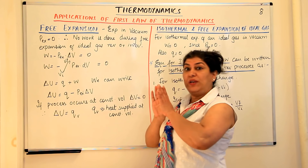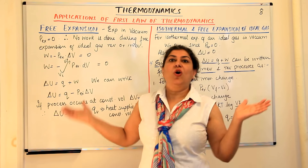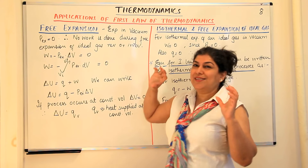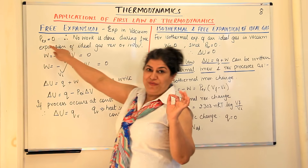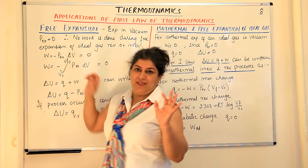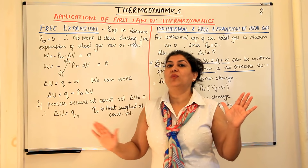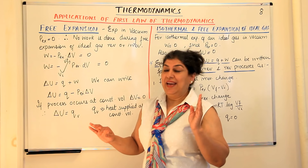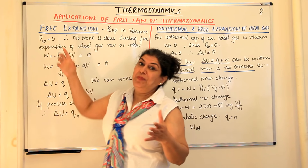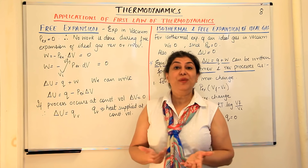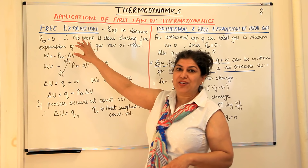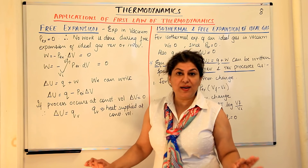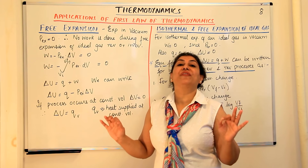There are no molecules which are going to push the piston back because there is no pressure on the outside. For free expansion, if there is vacuum, then P external equals zero. And what is work? Work is P delta V. If P external is zero, it means P delta V would also be zero. So for free expansion, work done is equal to zero — no work is done in the case of free expansion.